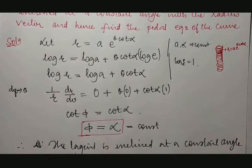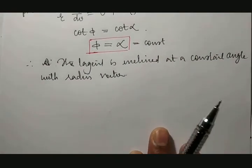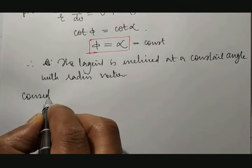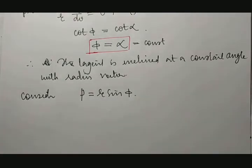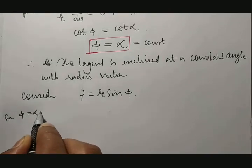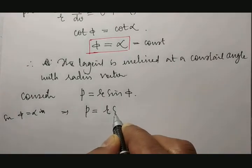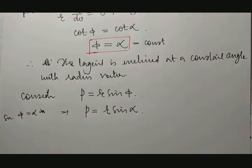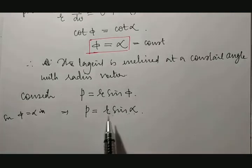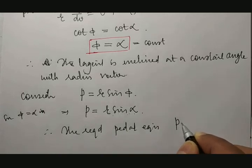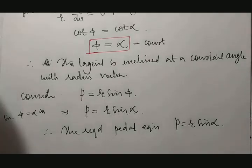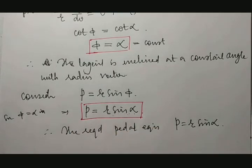Next, we need to find the pedal equation. Consider the length of perpendicular from the pole to the tangent: p is equal to r into sin ψ. Substituting ψ is equal to alpha, it becomes p is equal to r into sin alpha. There is no theta here, so the required pedal equation is p is equal to r into sin alpha, because there is no theta to eliminate.